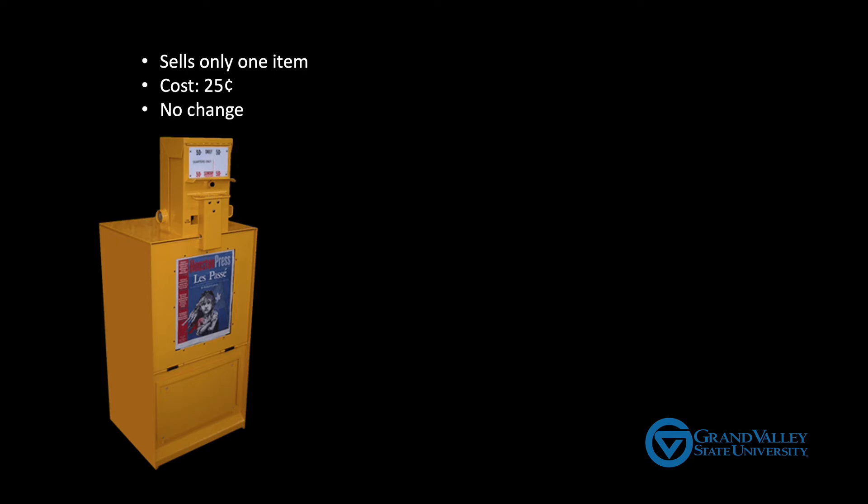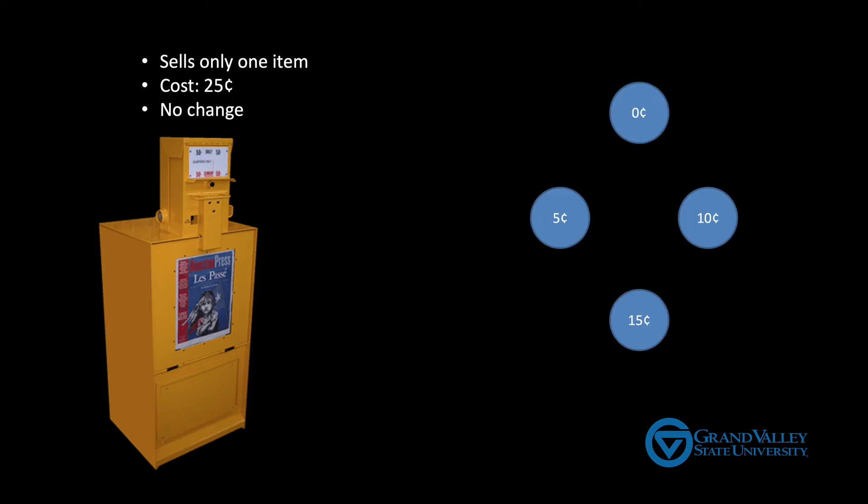So what are the states? For this example, there are different amounts of money that a user may have put in the machine during a transaction. So that would be a 0 cent, 5 cent, 10 cent, 15 cent, and 20 cent state. There's no 25 cent state because once the user has put 25 cents into the machine, he gets his newspaper and the machine resets to the 0 cent state in preparation for the next customer. Now there are other ways of handling the end of the transaction and the beginning of the next one, but I'm going to go with this simpler version just for this video.